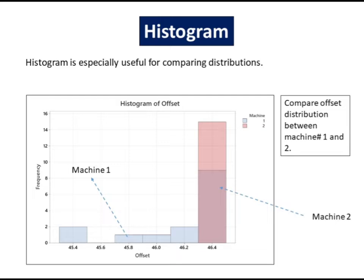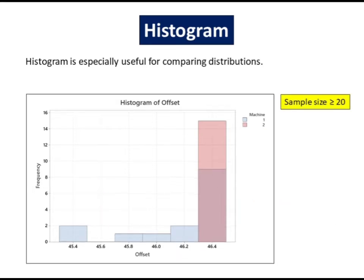For example, compare offset distribution between machine number 1 and 2. A histogram works best when the sample size is greater than 20.